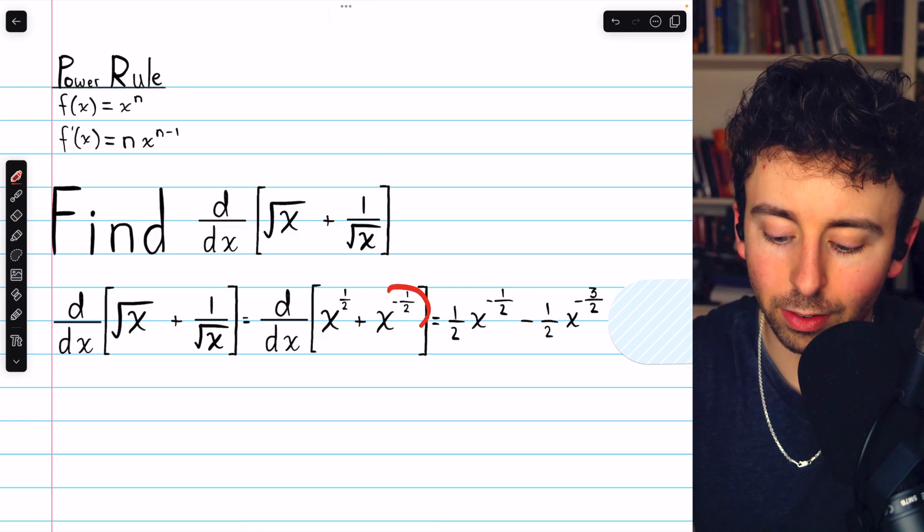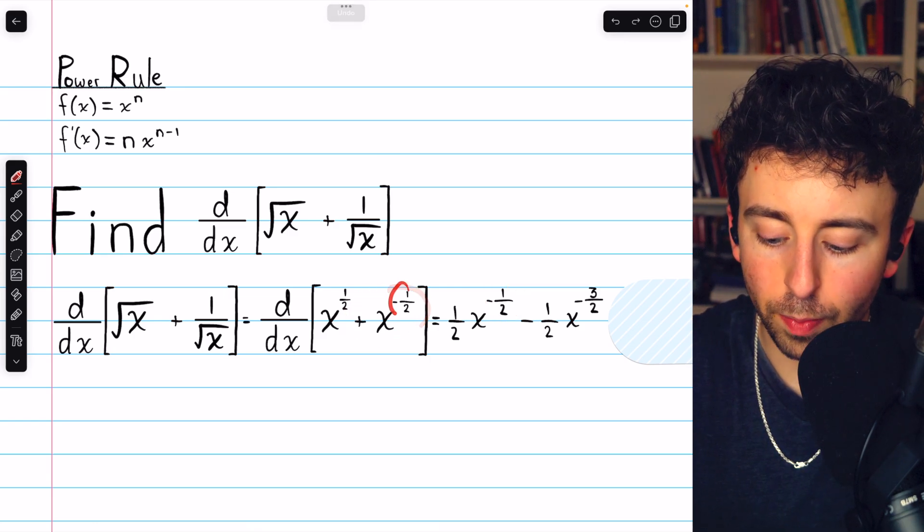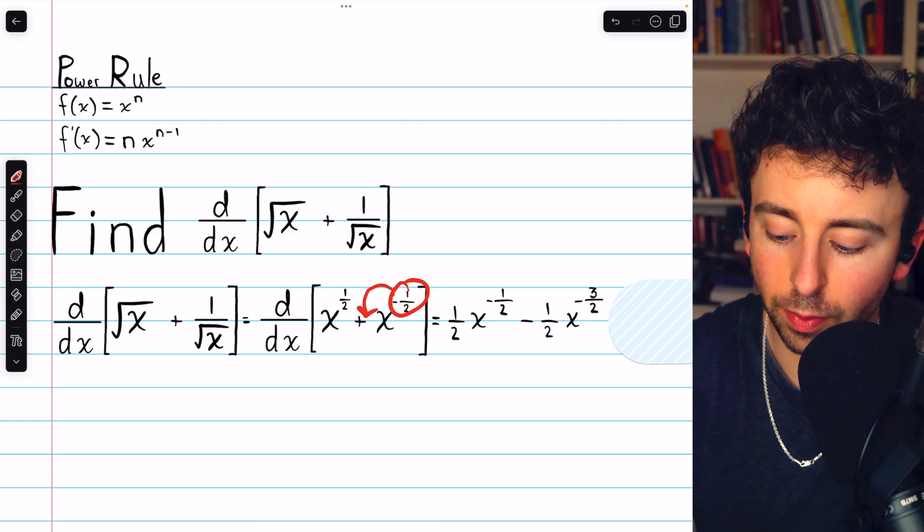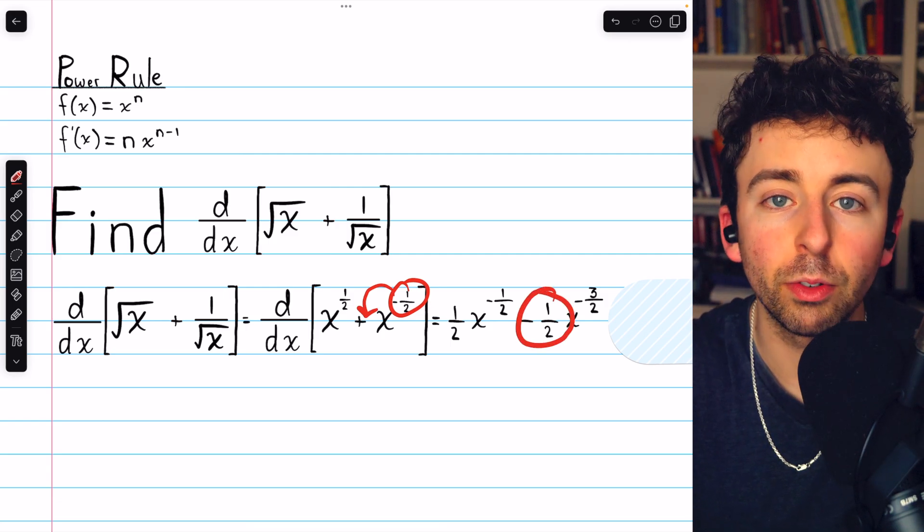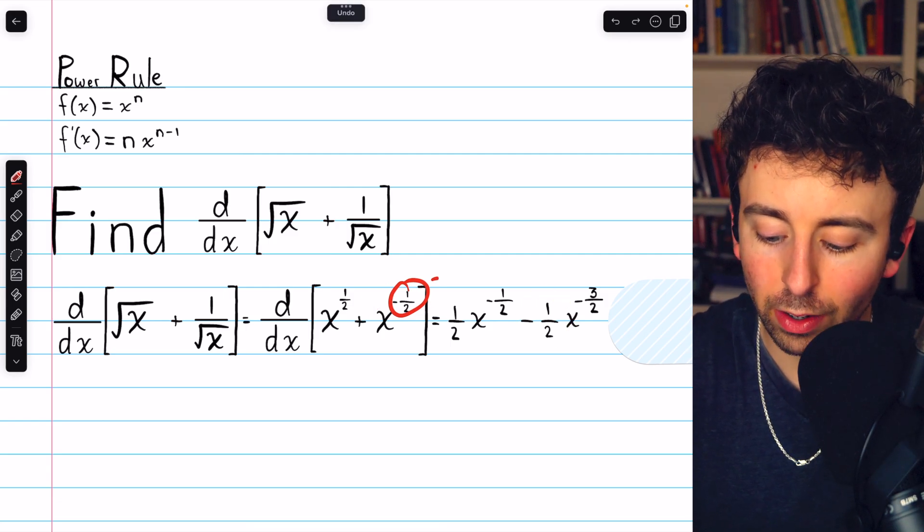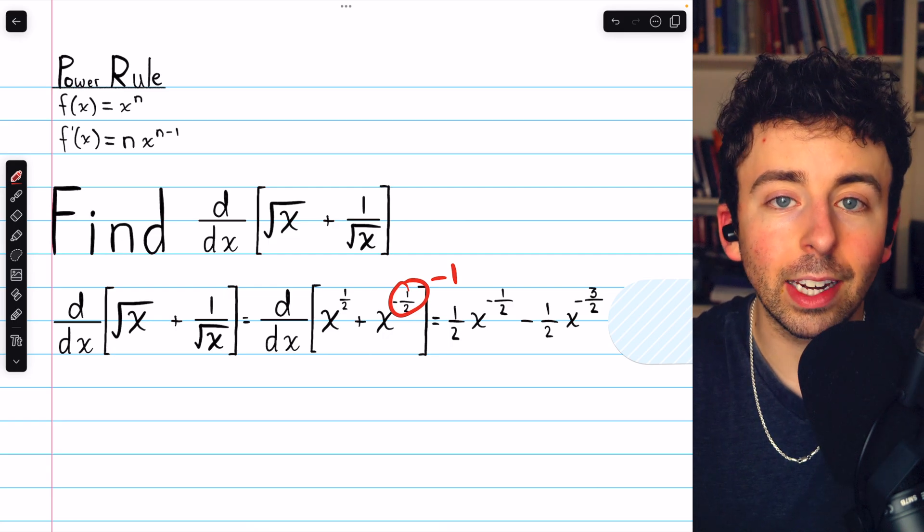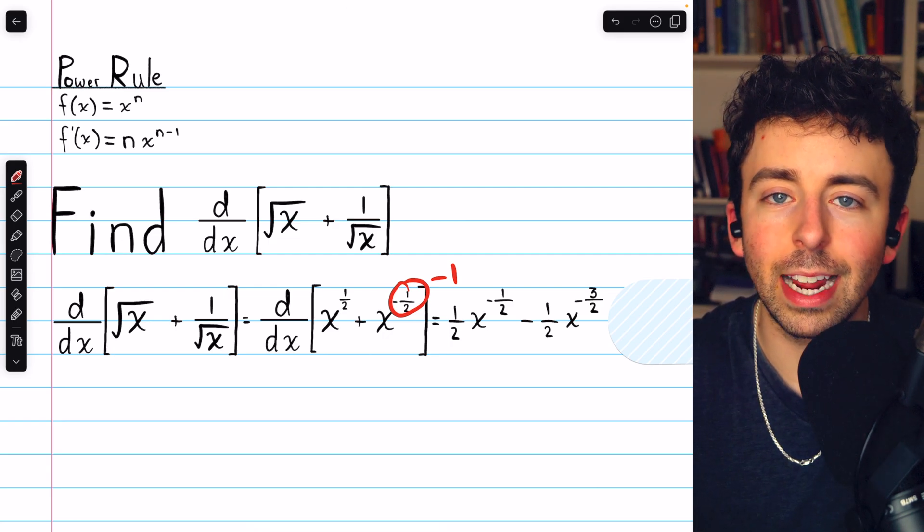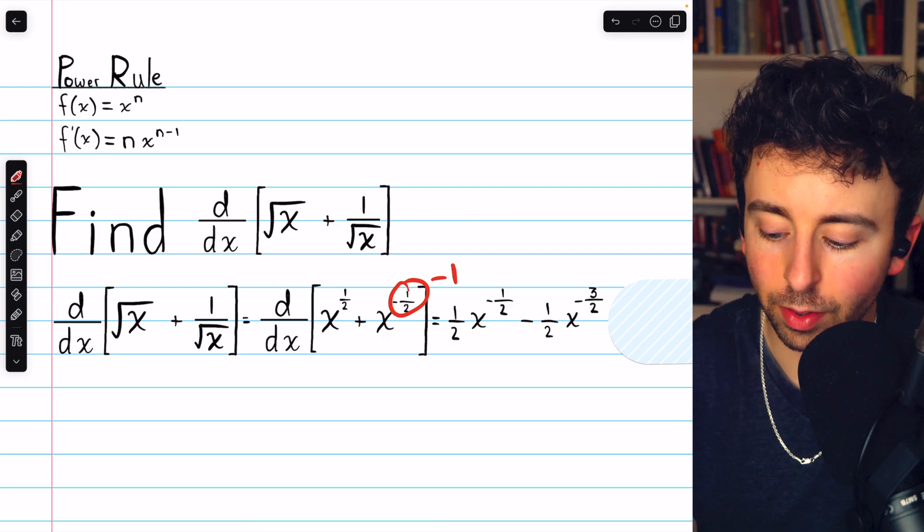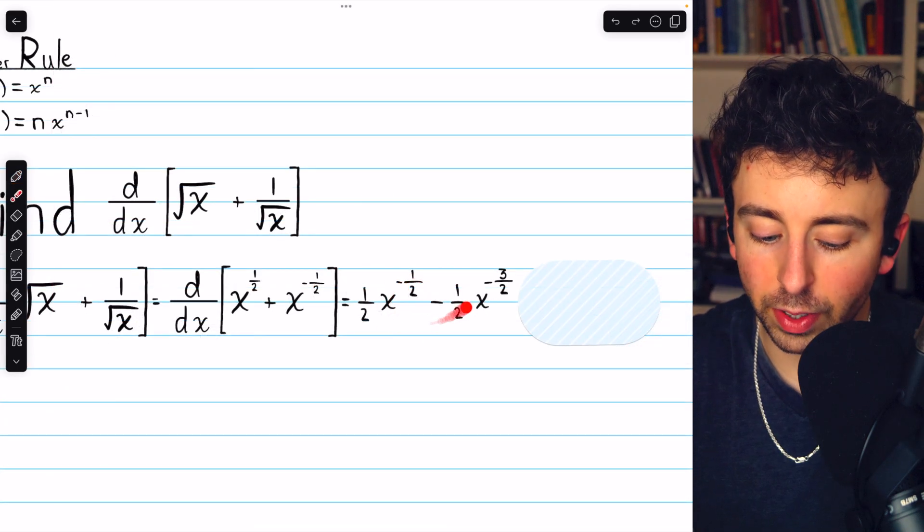Then we can move on to x to the negative 1 half. We have to bring the negative 1 half out front as a factor, which we see there, minus 1 half, and then subtract 1 from that power. Negative 1 half minus 1 is negative 1 half minus 2 halves, so negative 3 halves. So, that's our derivative.